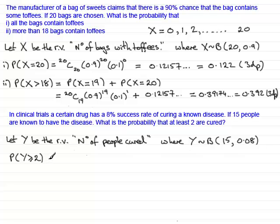Now in this particular problem, Y can be no people being cured or one person being cured, two people, three, four, etc. All the way up to and including 15. So this is the same as the probability that Y equals 2 plus the probability that Y equals 3, Y equals 4 and so on. All the way up to the probability that Y equals 15. Now this would be a horrendous sum to work out. And there is a way around this problem.